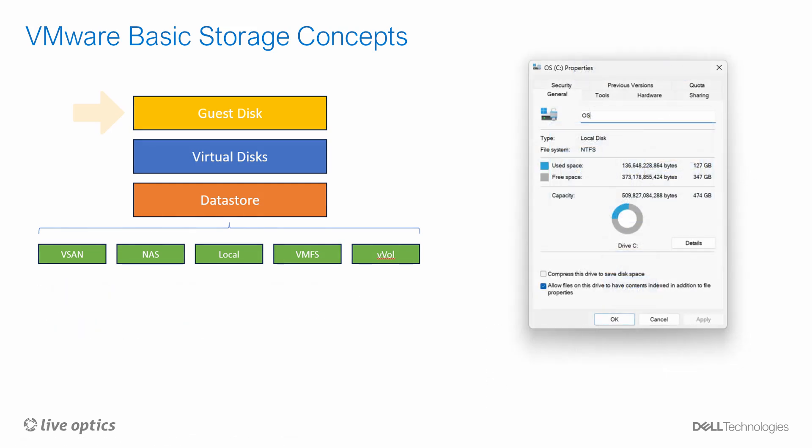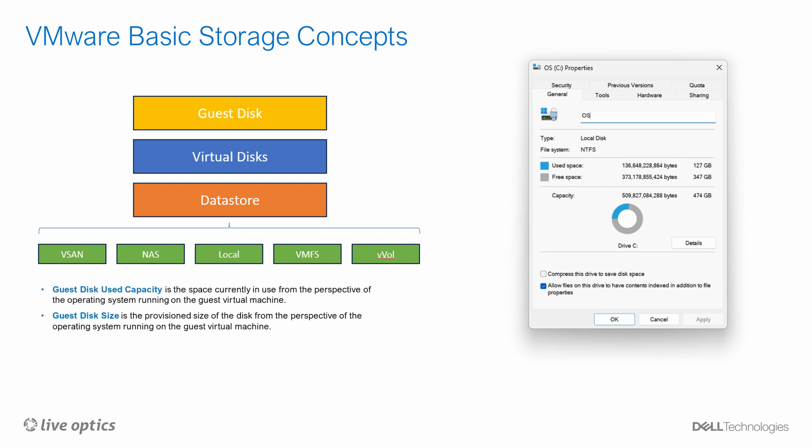From the virtual disks, we create the guest disks. The guest disk is the perspective of the disk from the operating system running on the guest virtual machine. Guest disks also have two basic properties: guest disk used capacity is the space currently in use from the perspective of the guest operating system, and guest disk size is the provisioned size of the disk from the perspective of the operating system running on the guest virtual machine.